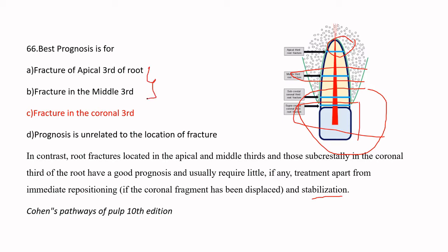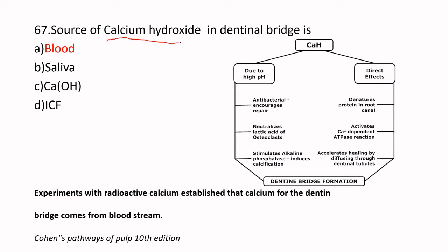The source of calcium hydroxide for dentin bridge formation is the blood of the pulp tissue. When calcium hydroxide is placed on the pulp tissue, it neutralizes the lactic acids of osteoclasts, acts as an antibacterial agent, stimulates alkaline phosphatase, and induces calcification. It takes nutrients from the blood to help in dentin bridge formation.